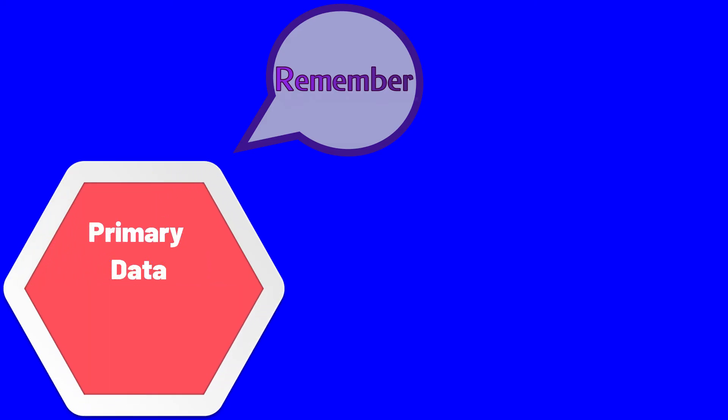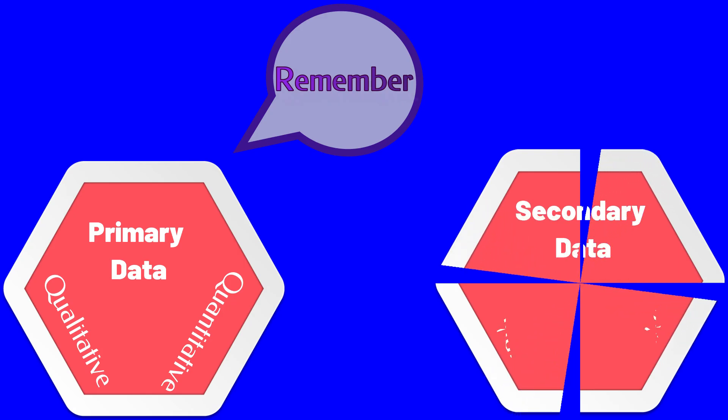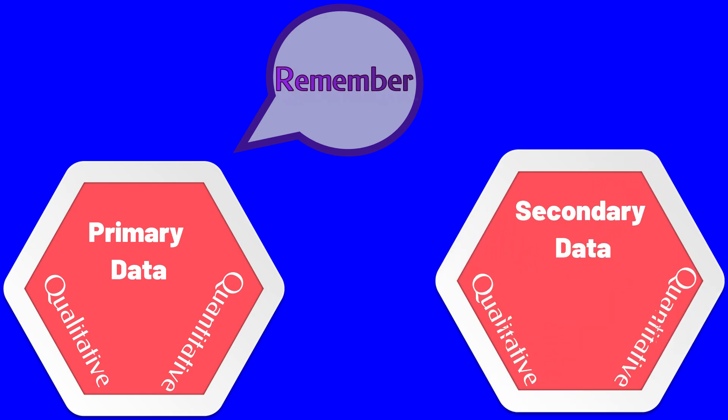Remember, primary data can be both qualitative as well as quantitative. For example, if a researcher is collecting data with the help of a questionnaire, it is quantitative data as well as primary data. But if the researcher is taking field notes, then it will be qualitative data. Similarly, secondary sources can also provide data both in qualitative or quantitative form.